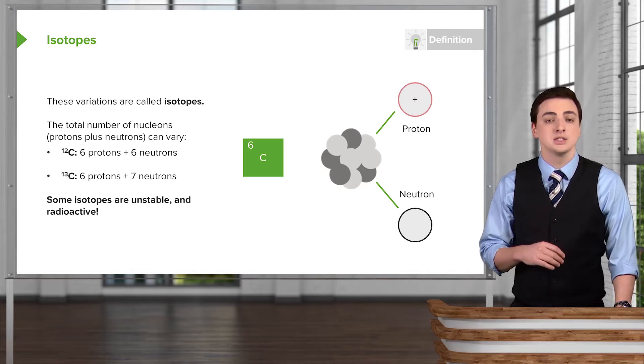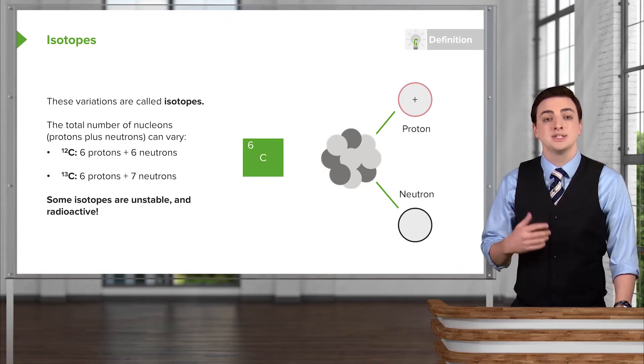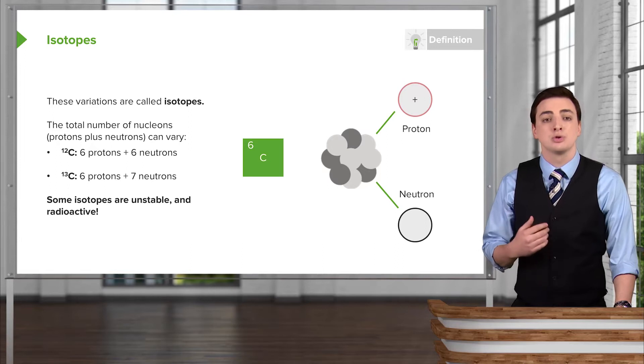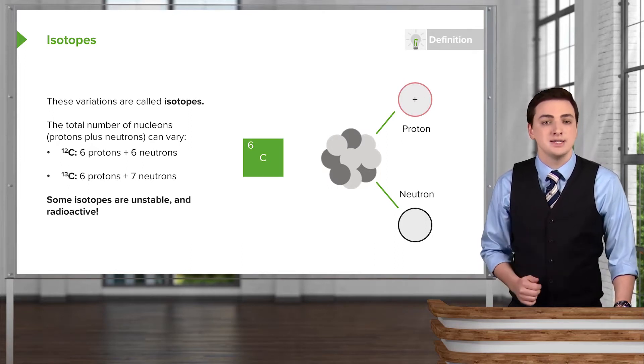The number of protons, which defines the carbon, is still six. On the other hand, we could have an isotope of carbon which has a different number of neutrons. In that case, the total number of nucleons would be 13, and we refer to it as carbon-13 instead.